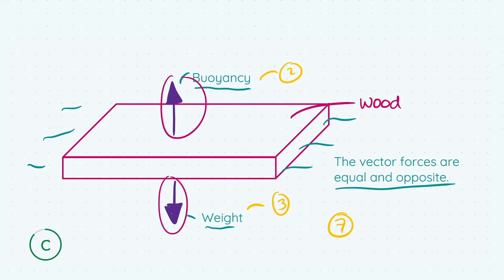Looking now at part D, we're asked to state the thermometric property of: part (i) a thermocouple, and part (ii) a mercury thermometer. A thermometric property is a property that changes measurably and repeatedly with a change in temperature. There are two different thermometric properties at work here for the thermocouple and the mercury thermometer respectively.